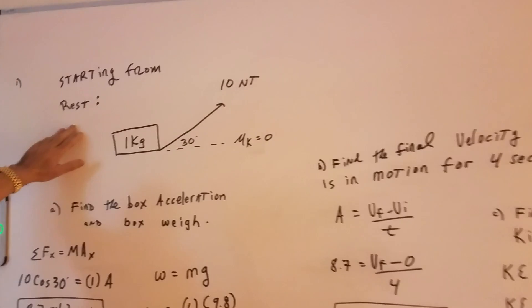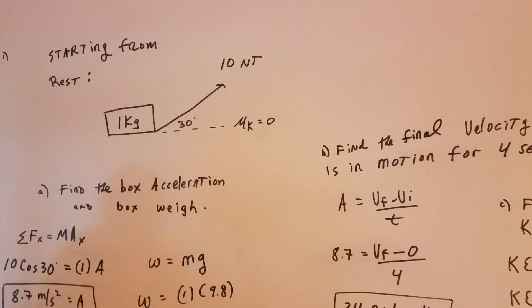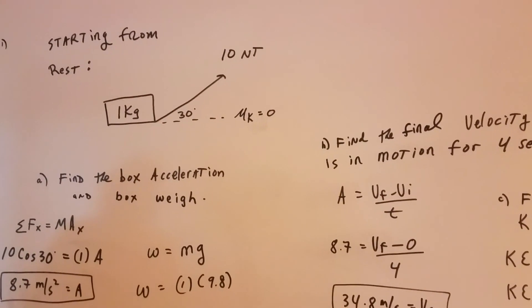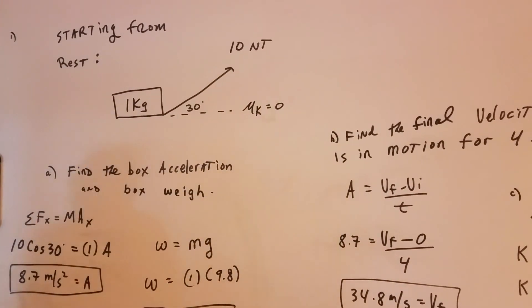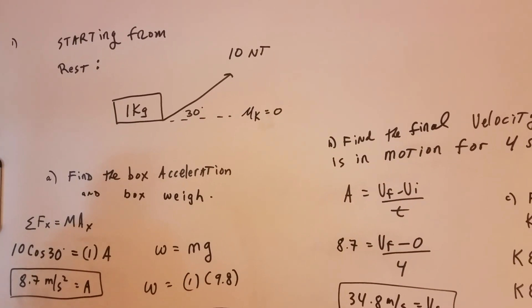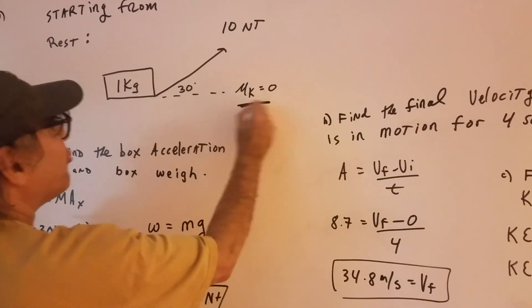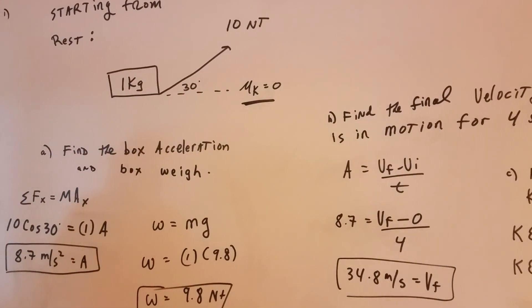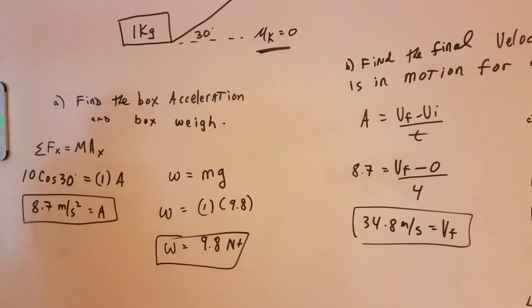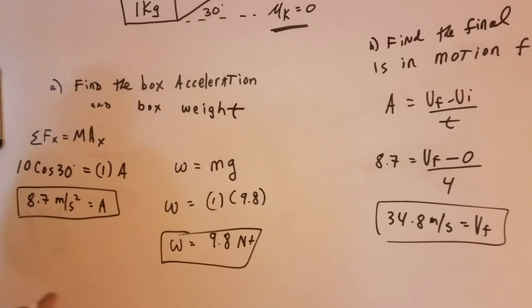What we're going to do is we're going to take a box. Now it could be anything, but I'll just call it a box that's one kilogram. It's going to start from rest, and we're going to pull it with a force of 10 Newtons at an angle of 30 degrees. And there's no friction. So the coefficient of friction is equal to zero. So it's a nice smooth surface. So we keep things real simple. What I want to do is to find the box acceleration and the box weight.